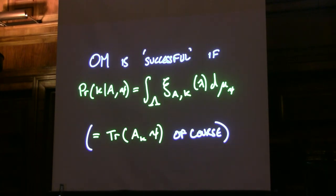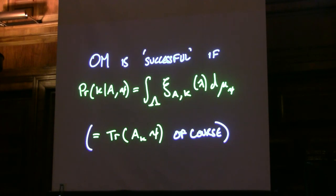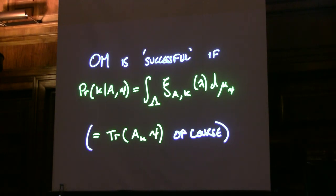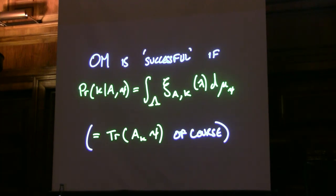So what do we want? On the left-hand side is the instrumental thing: we want the probability of a particular outcome obtaining when I use some measuring device on something prepared in a particular quantum state. The idea is that if I do this sum over the ontic state space — the space of real states — with respect to the measure corresponding to the quantum state, that gives me the same probability as quantum theory, which we all know.